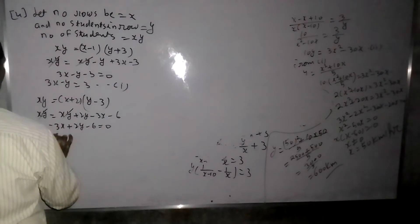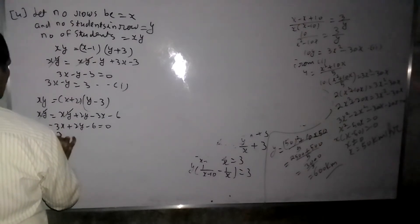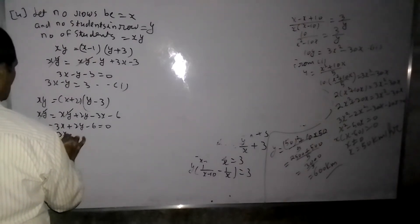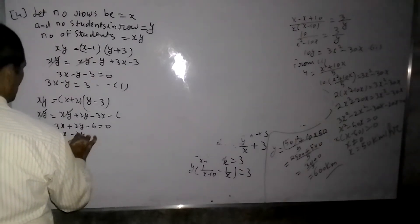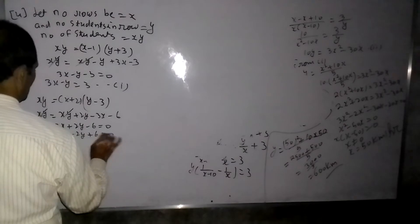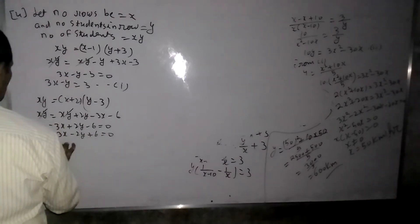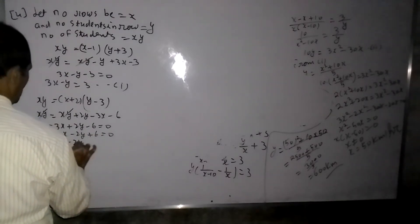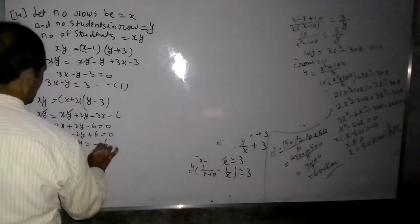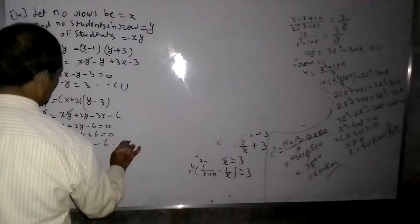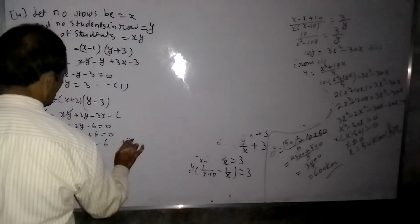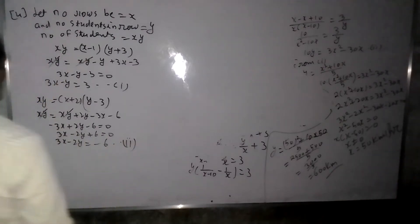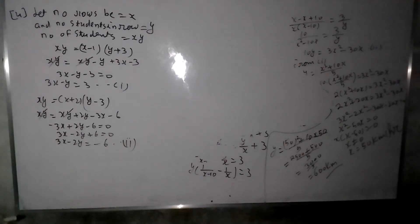So we get 3X minus 2Y plus 6 equals 0. Let me verify: 3X minus 2Y minus 6. Checking if this equals zero — let's start again to make sure.